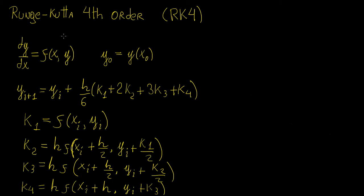We're going to get an equation in this form — we solve for the first derivative in terms of a function of x and y. We also get an initial condition. The update equation that we put inside a loop: the next value of y equals the previous value of y plus a weighted sum of terms. k1 through k4 are broken down into four expressions, and h is the step size — that's just conventional notation.